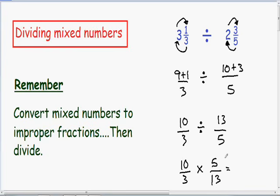First, I'm going to multiply my numerators. In our numerator, we have 10 times 5. And now I'm going to multiply the denominators. In our denominator, we have 3 times 13.